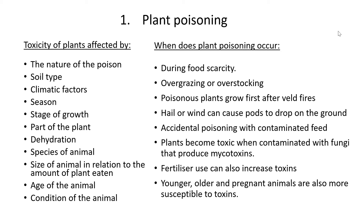So when does plant poisoning actually occur? It can happen during food scarcity — if there's no other option, the animal will eat a toxic plant because they are hungry. Then overgrazing or overstocking — again, if there's no other option, they will have to eat the poisonous plants. Poisonous plants also grow first after veld fires, so if everything's been burned and these poisonous plants are the first to grow green, the animals will eat them.